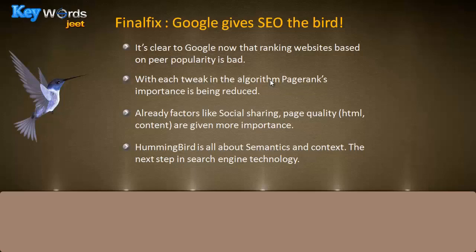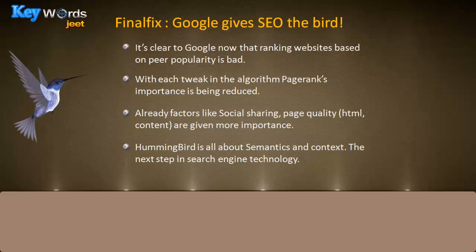Finally, the latest update — Hummingbird — represents the last step, the holy grail of search engine evolution. With Hummingbird, Google tries to understand content. Hummingbird is all about semantics and context — the next step in search engine technology. In the coming lessons we will discuss exactly what that means, how revolutionary it is, and how it will change search in a big way going forward. This is the end of the first lesson — I hope you now understand what the problem in search was, what Google did to fix it, and why so many earlier SEO tactics are no longer effective.